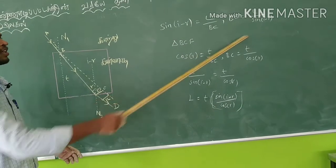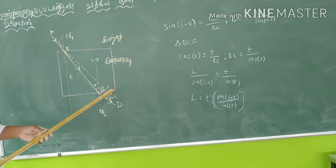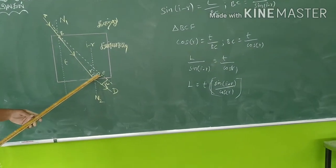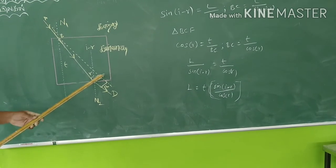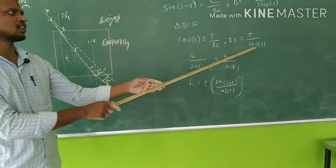If we have BC, we have B, C and F. What do you want to do here? We have B and C. We have C. Cos r equals t by BC. BC equals t by cos r.